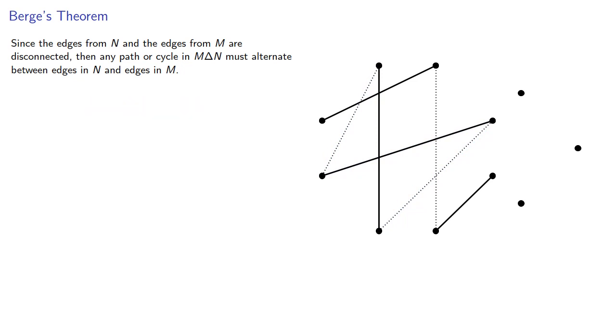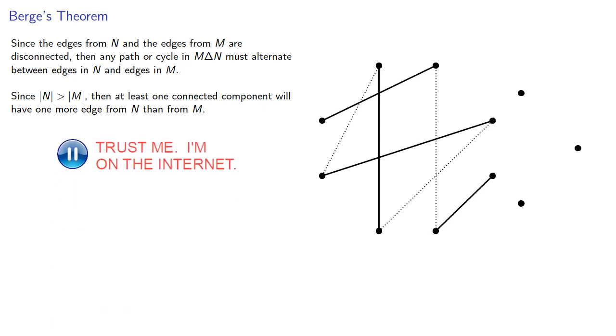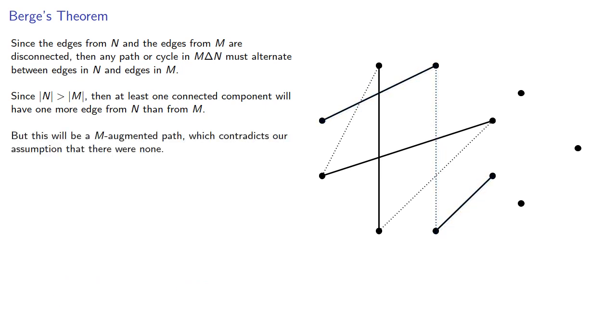And by assumption, since N is larger, then at least one connected component will have one more edge from N than from M. But this will be an M-augmented path, which contradicts our assumption that there were none. Alternatively, we can alternate which edges are in our matching and get a larger matching.